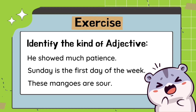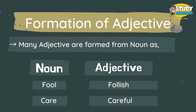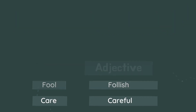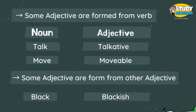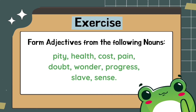Now finally we will learn how adjectives are formed. Many adjectives are formed from nouns — for example, from 'fool' to 'foolish,' from 'care' to 'careful,' and so on. Some adjectives are formed from verbs — for example, from 'talk' to 'talkative,' from 'move' to 'movable.' Some adjectives are also formed from other adjectives — for example, from 'black' to 'blackish.'